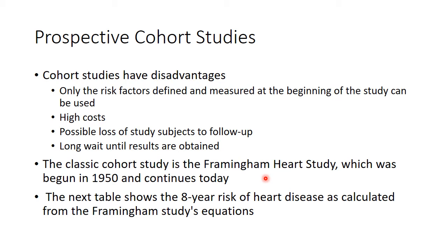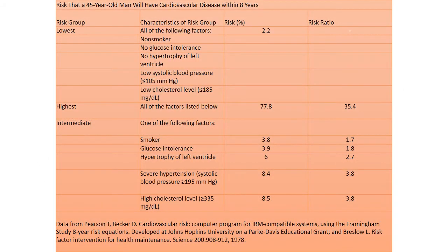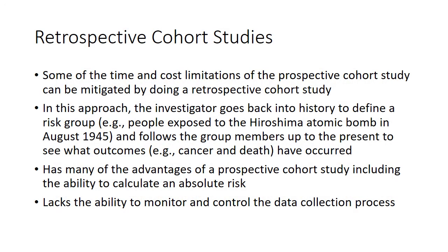The Framingham study developed equations to calculate eight-year risk of cardiovascular disease, looking at factors such as smoking status, glucose intolerance, and blood pressure in a 45-year-old man. Investigators placed people into different cohorts based on these risk factors, then followed them forward for many years to determine how likely they were to develop cardiovascular disease.